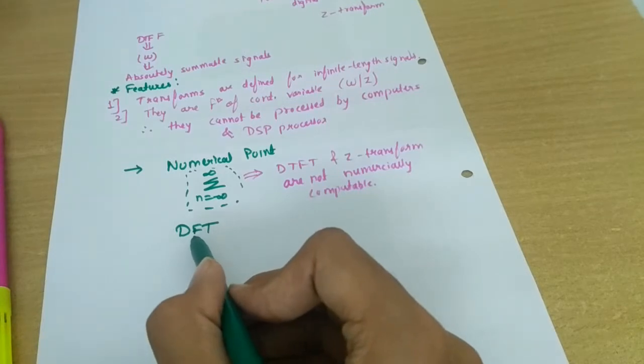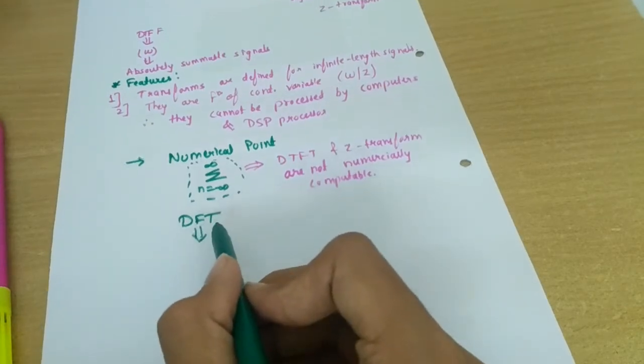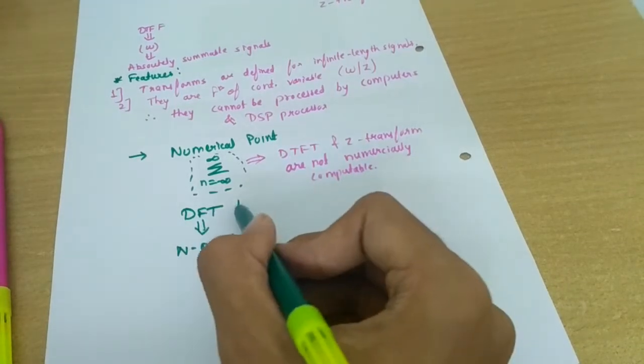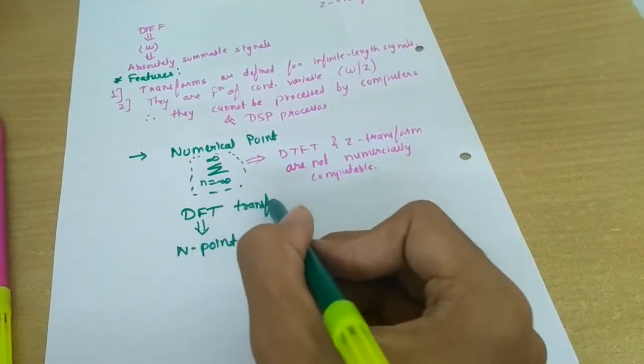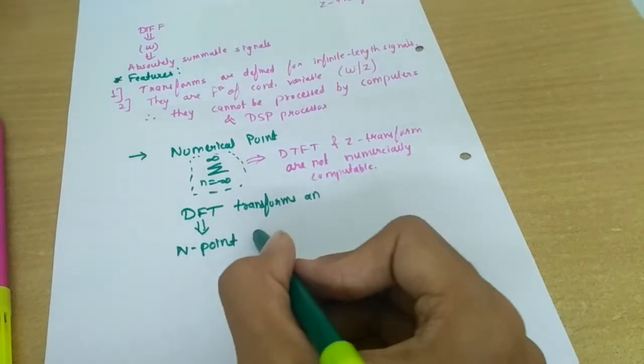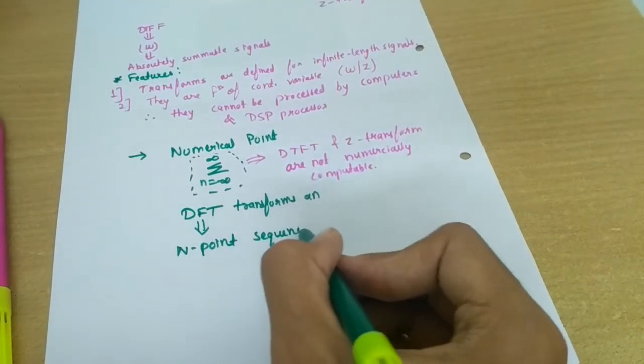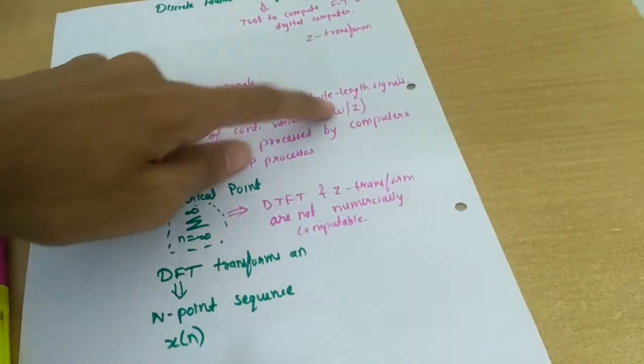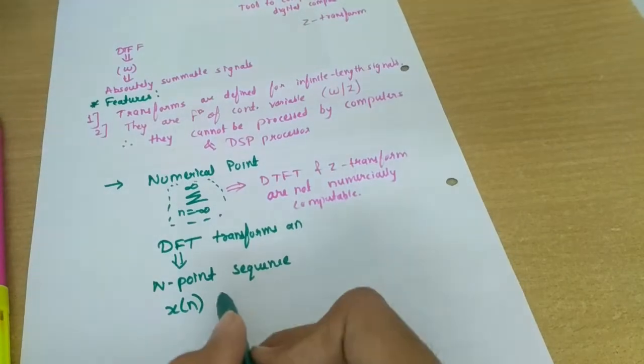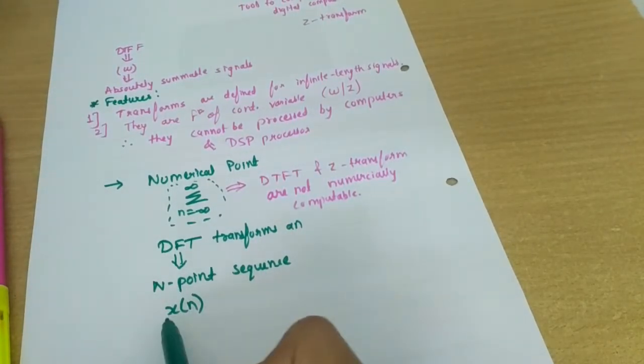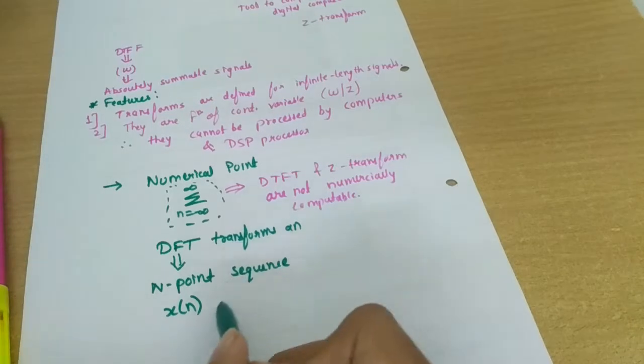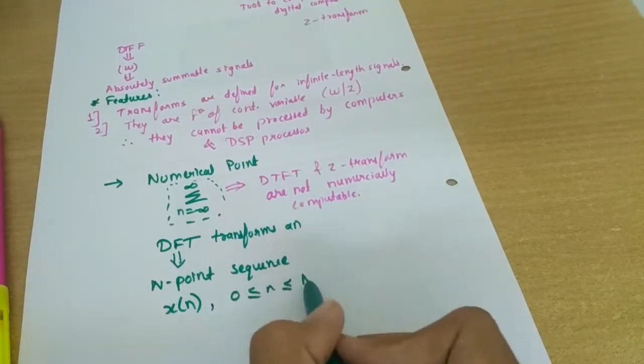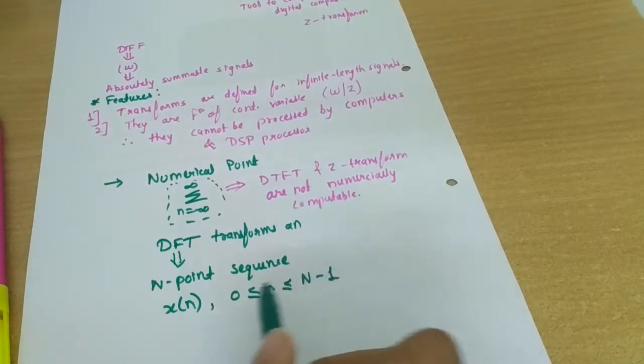So DFT is - transforms an n-point sequence. What it do? DFT transforms an n-point sequence X of n. Note that in DTFT, transforms are defined for infinite length signals, whereas DFT transforms an n-point sequence, that is this is our signal or again our sequence is n-point, that is n is belonging to 0 to n minus 1, that is total n terms.